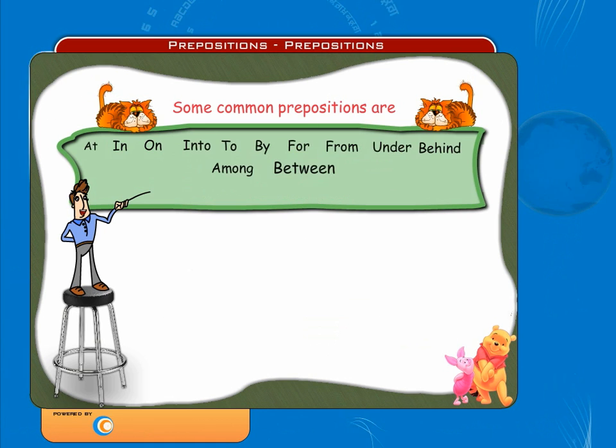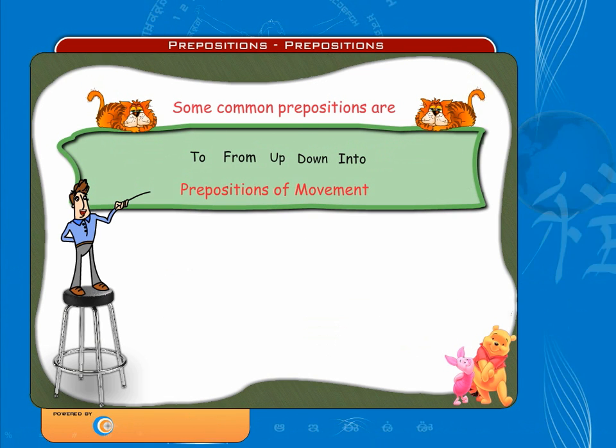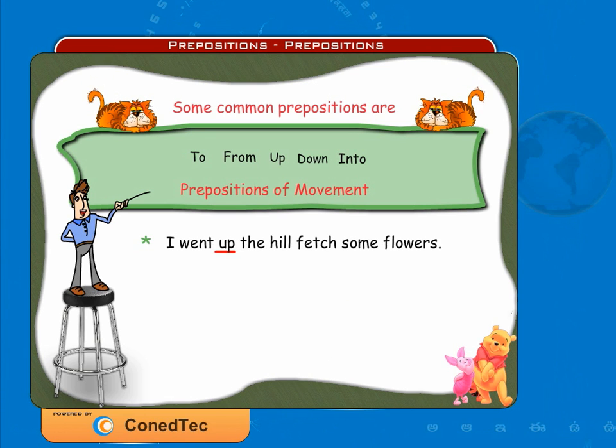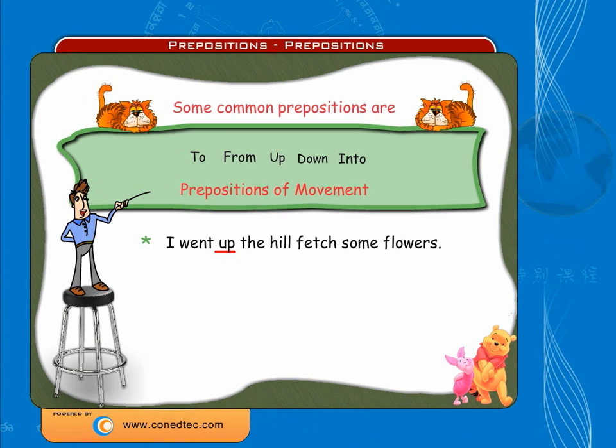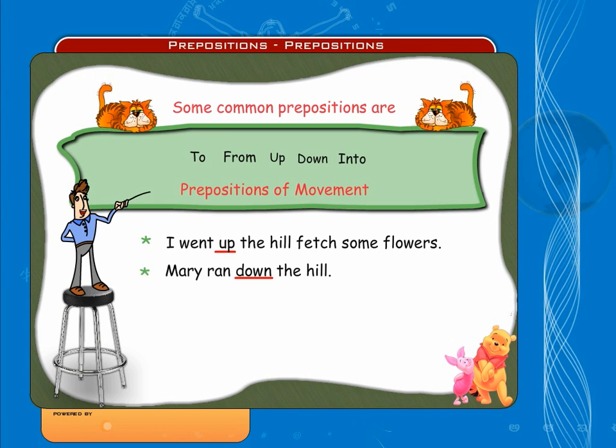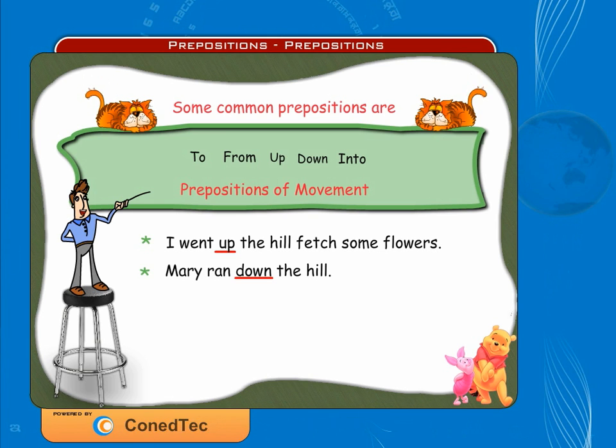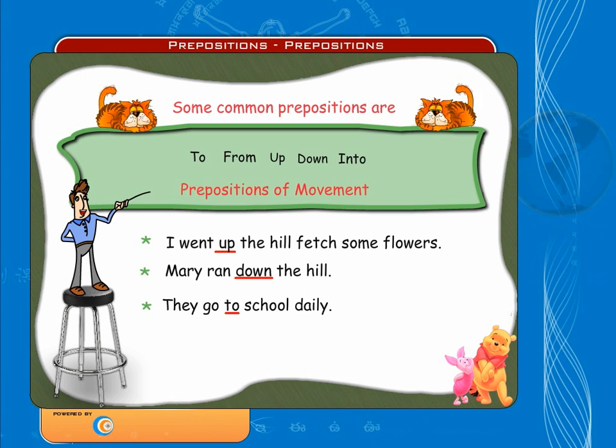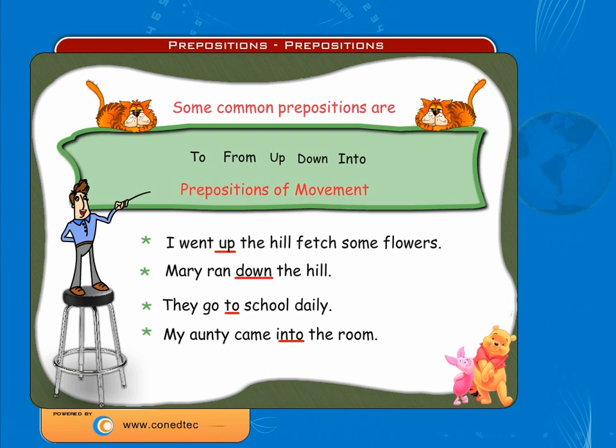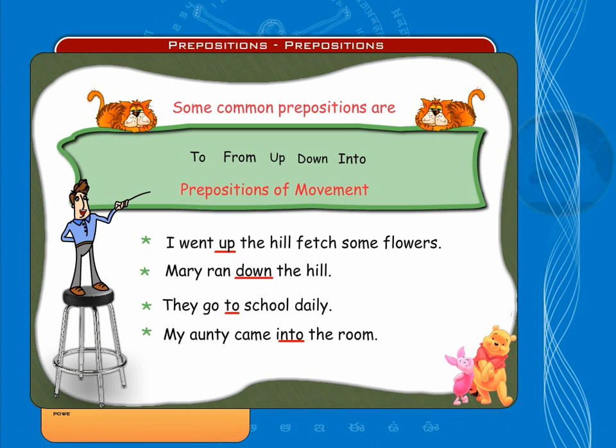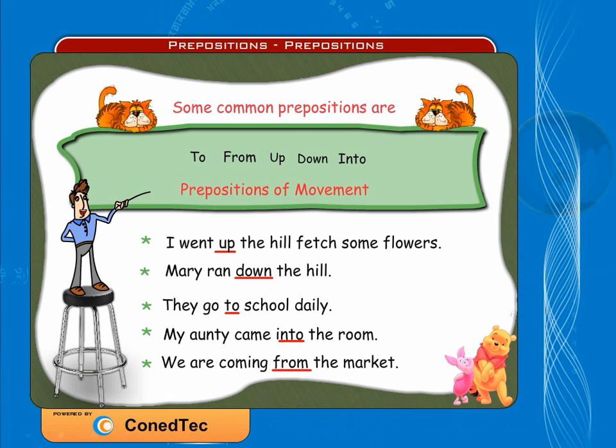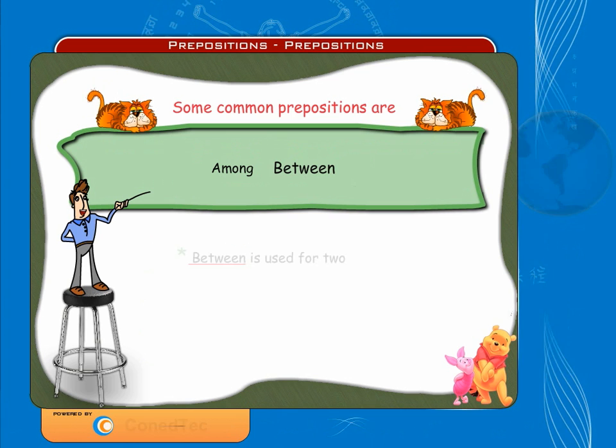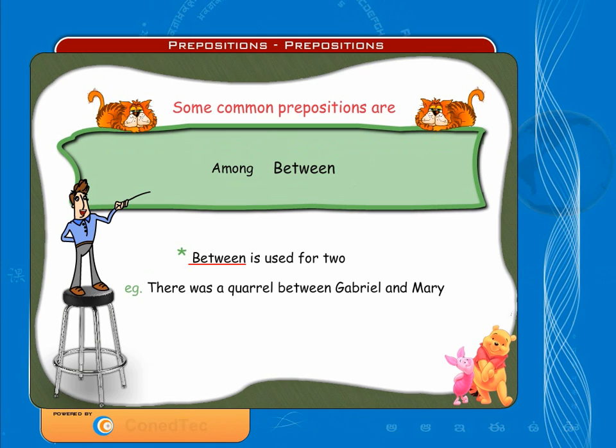To, from, up, down, and into are prepositions of movement. I went up the hill to fetch some flowers, where 'up' becomes the preposition. Mary ran down the hill, where 'down' represents the preposition. They go to school daily, where 'to' becomes the preposition. My auntie came into the room, where 'into' becomes the preposition. We are coming from the market, where 'from' becomes the preposition.